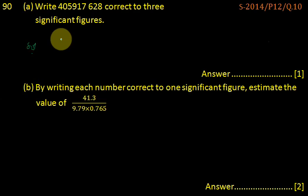A big number is given, it is 405917628, and we have to constrain this number up to 3 significant figures.